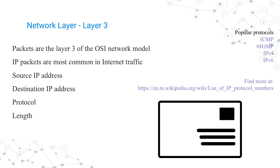An IP packet, or a piece of data that's sent as a unit, can be defined as having a header and payload. The header contains a source and a destination address, much like an envelope that you would mail with the United States Postal Service. The protocol information tells you about what's in this packet and the next enclosed layer. The last component of an IP packet is the length of the payload, which is important for the receiving node to know how much data to expect before the next packet is received.